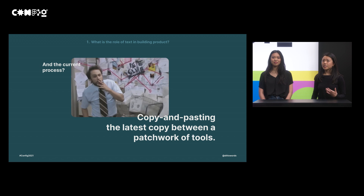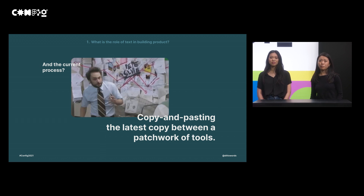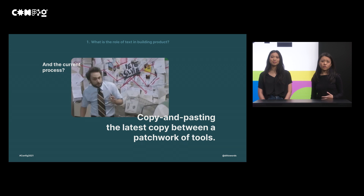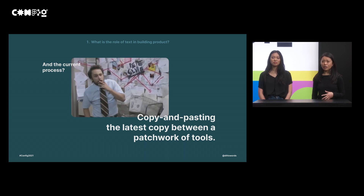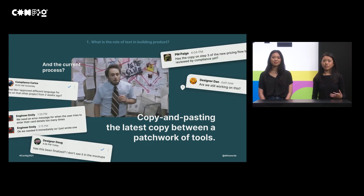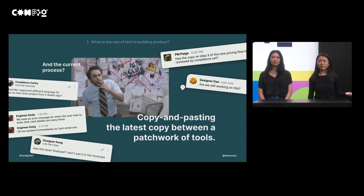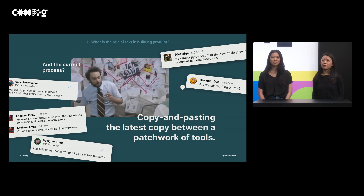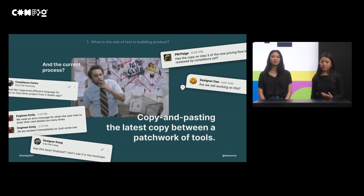Throughout our journey building Ditto, we've talked with hundreds of teams about their copy workflows, and we've seen how tricky it is to establish a process that reflects the integral role of text in design while accounting for how cross-functional it is. For lots of teams, copy exists in lots of different places — mock-ups, external spreadsheets, docs, Slack messages, Jira tickets, or sometimes just in the code itself. The same questions come up every time a new project starts: Is this copy on the mocks the final version? Who wrote this? When did this get changed? Did legal review this yet? Between screenshots messaged in Slack and copy tables in Word docs, copy can end up detached from its goal of designing for users.